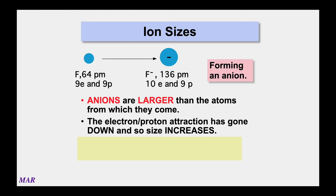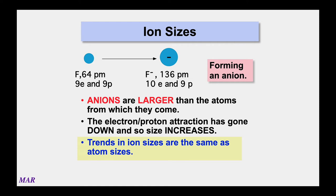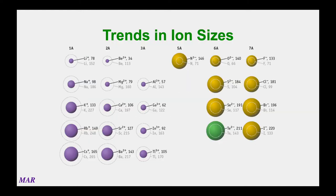Summary: anions are always larger than the atoms from which they come; cations are smaller and anions are larger. For ion sizes on the periodic table, they generally get bigger as you go left and down — just like neutral atoms. But you can only compare anions to anions or cations to cations, since cations are inherently smaller than anions.